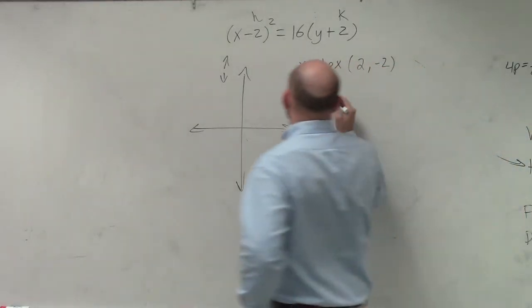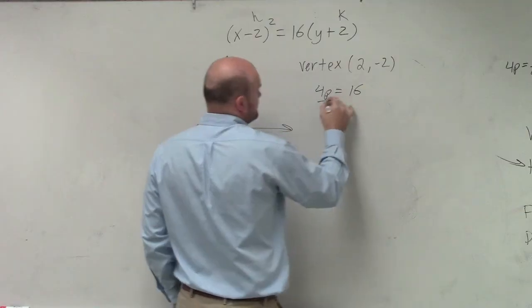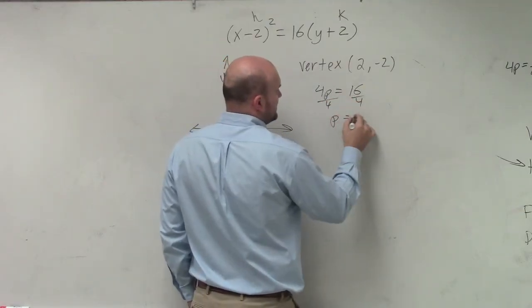Let's see, the next thing I need to figure out is my 4p, or my p. 4p equals 16, divided by 4, p is equal to 4.